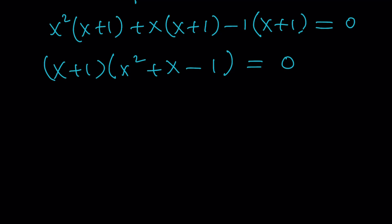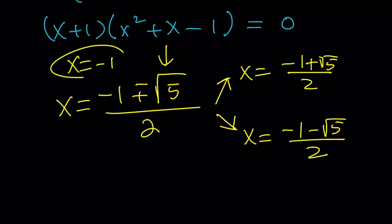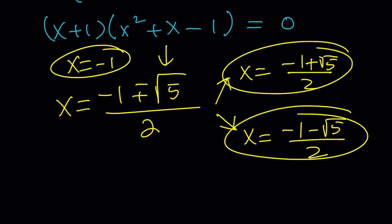And from here, we already know x equals negative 1, but we can find the other solutions. Let's use the quadratic formula. Negative b plus minus the square root of b squared minus 4ac. It's going to be a 5 and kind of like a golden flavor-ish. One of the solutions is going to be negative 1 plus root 5 over 2. And the other solution is going to be negative 1 minus root 5 over 2.